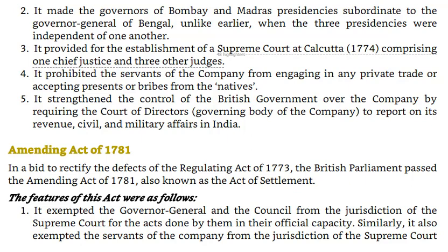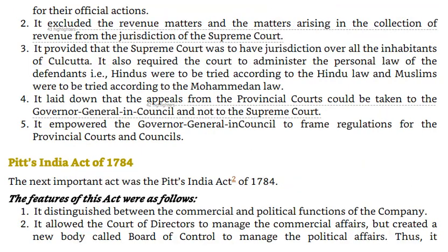Amending Act of 1781. In a bid to rectify the defects of the Regulating Act of 1773, the British Parliament passed the Amending Act of 1781, also known as the Act of Settlement. Its features were: 1. It exempted the Governor-General and Council from the jurisdiction of the Supreme Court for acts done in their official capacity; similarly, servants of the Company were also exempted for their official actions. 2. It excluded revenue matters from the Supreme Court's jurisdiction. 3. It provided that the Supreme Court had jurisdiction over all inhabitants of Calcutta, requiring the court to administer personal law — Hindus under Hindu law and Muslims under Mohammedan law. 4. Appeals from provincial courts could be taken to the Governor-General in Council, not to the Supreme Court. 5. It empowered the Governor-General in Council to frame regulations for the provincial courts and councils.